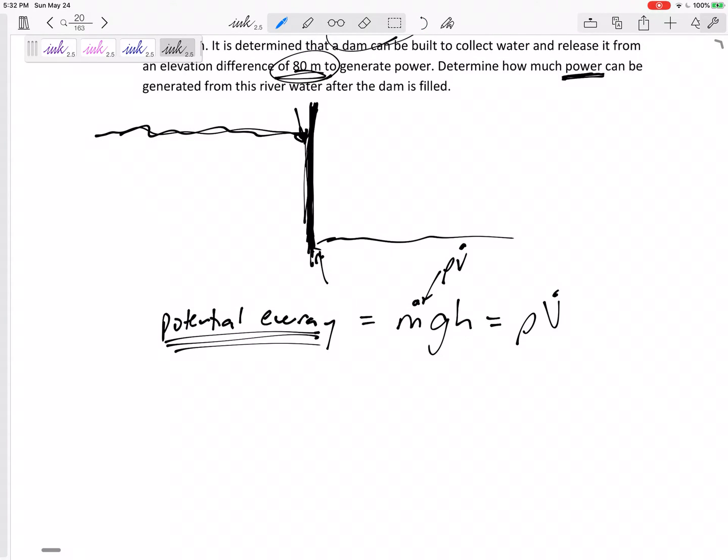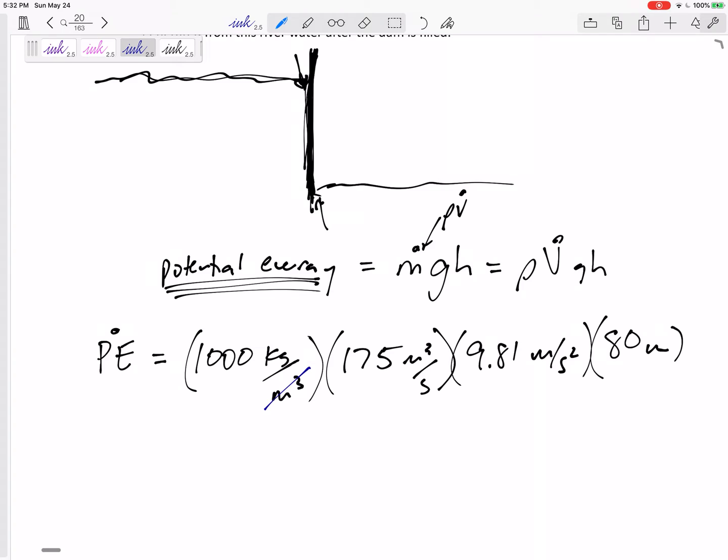The potential energy with a dot is equal to rho. It didn't give us the rho, this is water though, density of water is a thousand kilograms per meter cubed, times the V dot 175 meters cubed per second, times gravity 9.81 meters per second squared, and height of 80 meters.